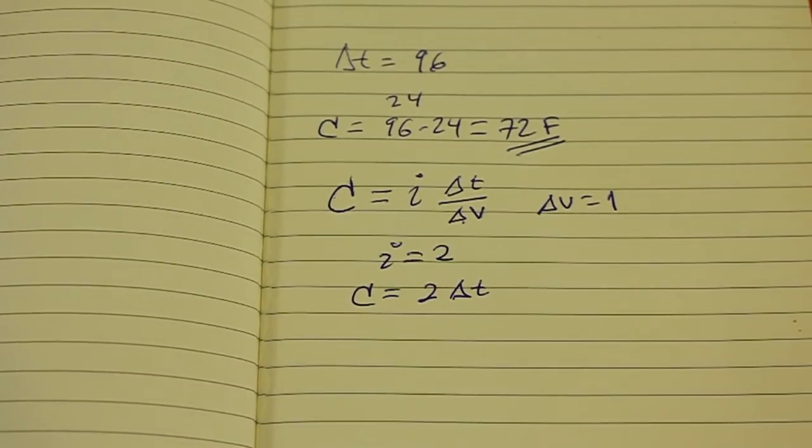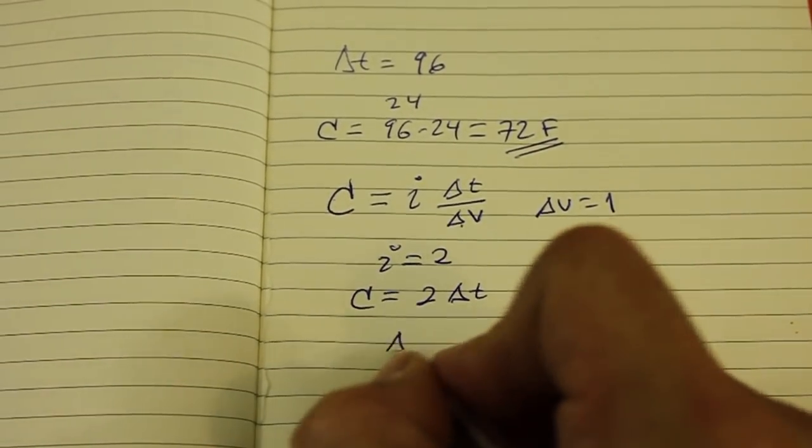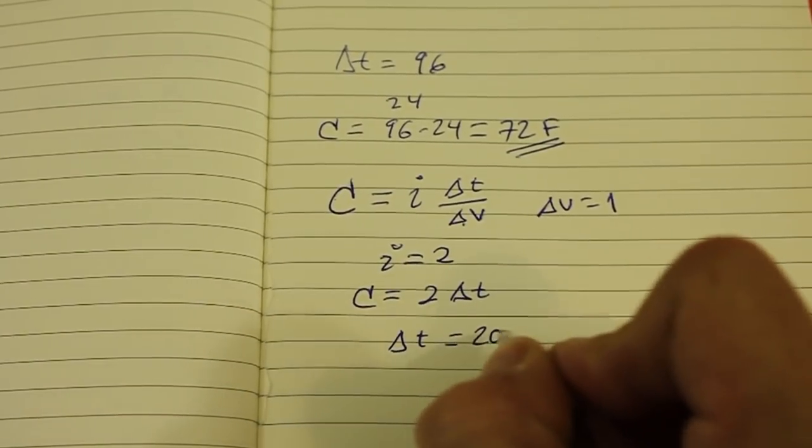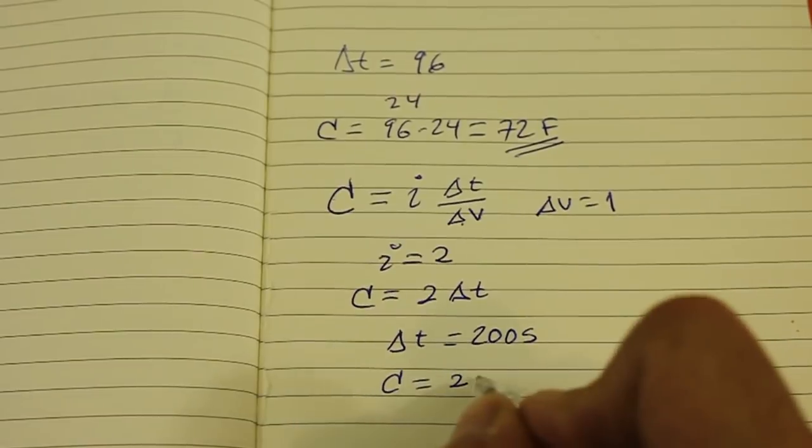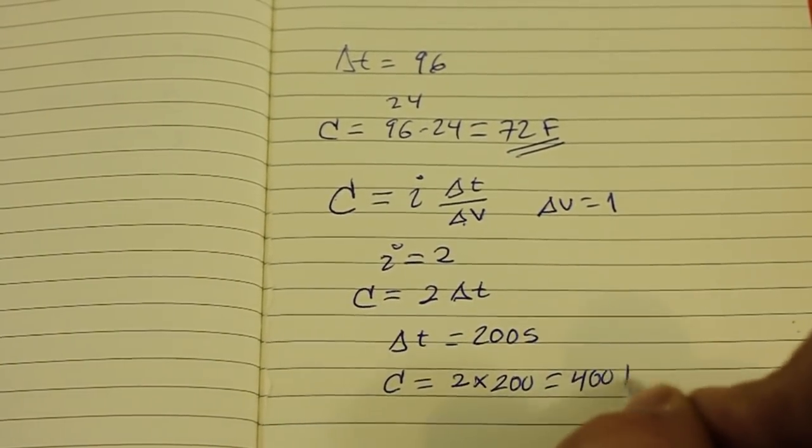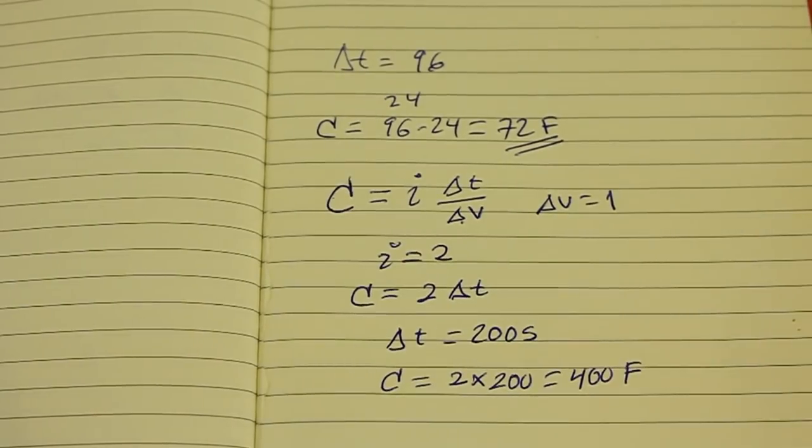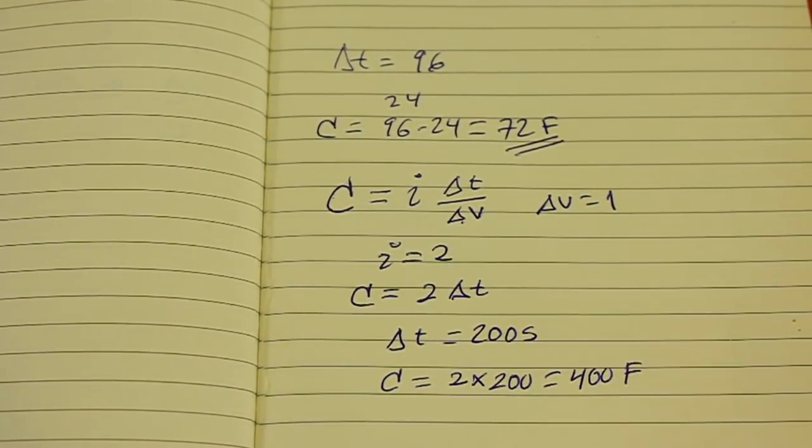For example, if we get a time interval of 200 seconds, then capacitance will be double that quantity, or 400 farads. And of course, we can use a larger current to reduce the charging time.